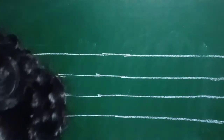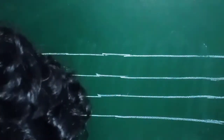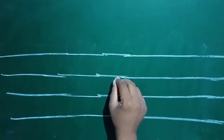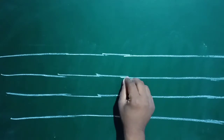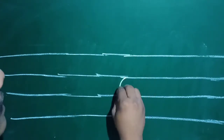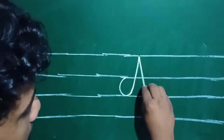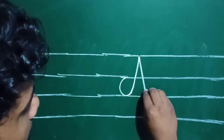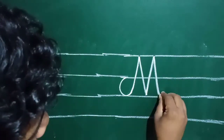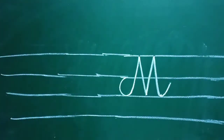Capital letter M starts from the second line — 1, 2, second line. Like this — go up, go down, go up, then go down. Capital letter M.